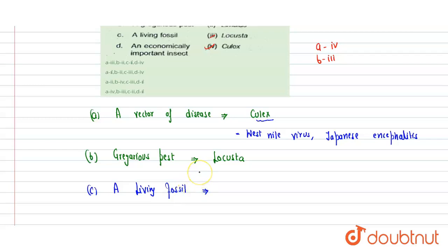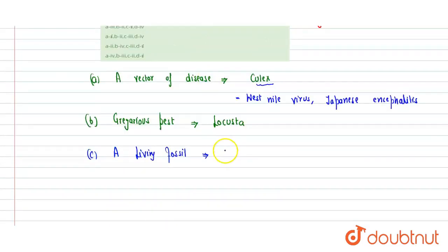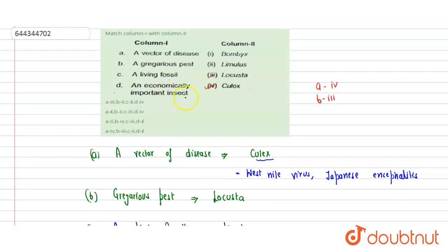Limulus is an example of a living fossil. Limulus is also known as king crab. It has remained the same over periods of years and years, so that's why it is termed as a living fossil. We can say that for c, the correct match is number two, and definitely the last one will be correct.